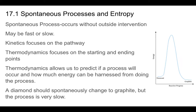Section 17.1 talks about spontaneous processes and the importance of entropy. A spontaneous process is one that does not need help to occur — it occurs without outside intervention. These are the processes that are thermodynamically favored. A spontaneous party doesn't require planning or preparation — it just breaks out. In the same way, a chemical process that does not need help to occur is spontaneous. It might need help to get started and may have a high activation energy, but it doesn't need help to occur. It's naturally going to occur.